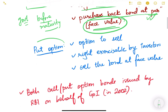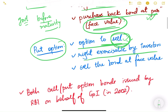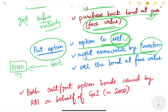Similarly, for the put option, it is the option to sell, and this sell option will be with the investors. For example, if some investor has purchased a bond of say face value rupees 1000 from the government, and this bond is for 10 years but after 5 years the investor wants to put it back, it has the put option. The investor can redeem the bond after 5 years, and the government will have to pay the face value.